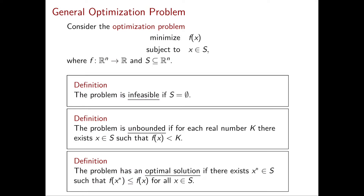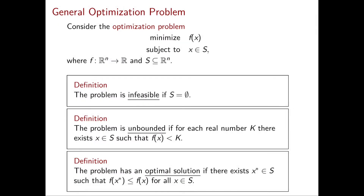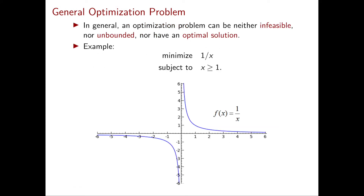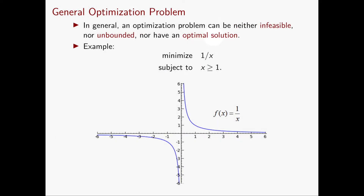Note that in chapter 1 we have seen linear programming problems of all three types. Now a natural question is whether there exist other possible outcomes of an optimization problem. And this is indeed the case — a general optimization problem might not have any of those three outcomes: it can be neither infeasible, nor unbounded, nor have an optimal solution.